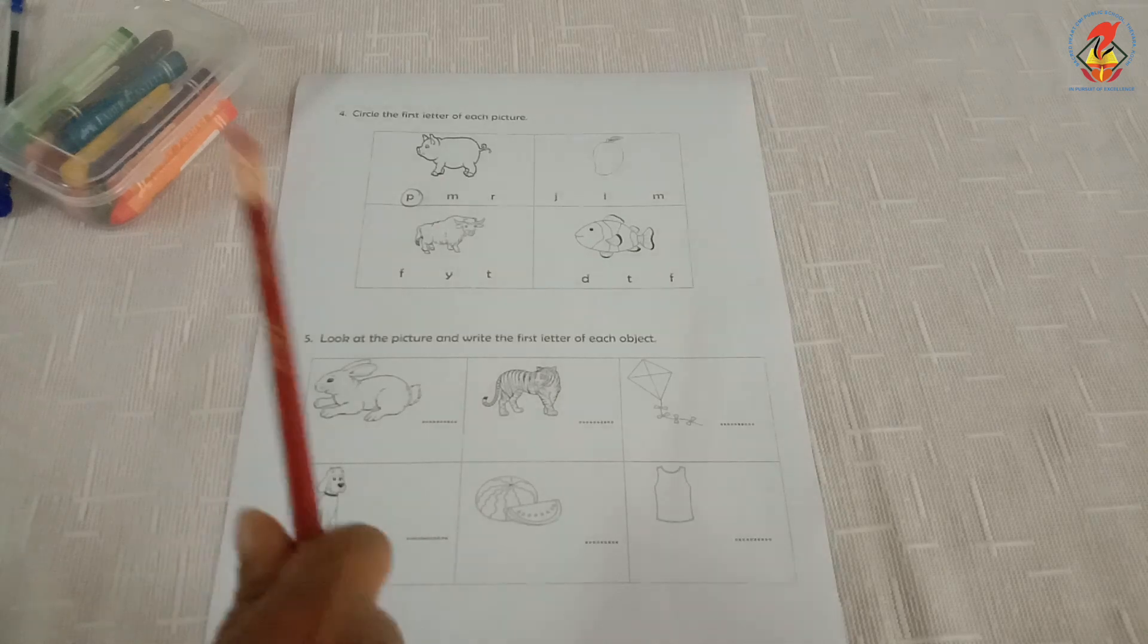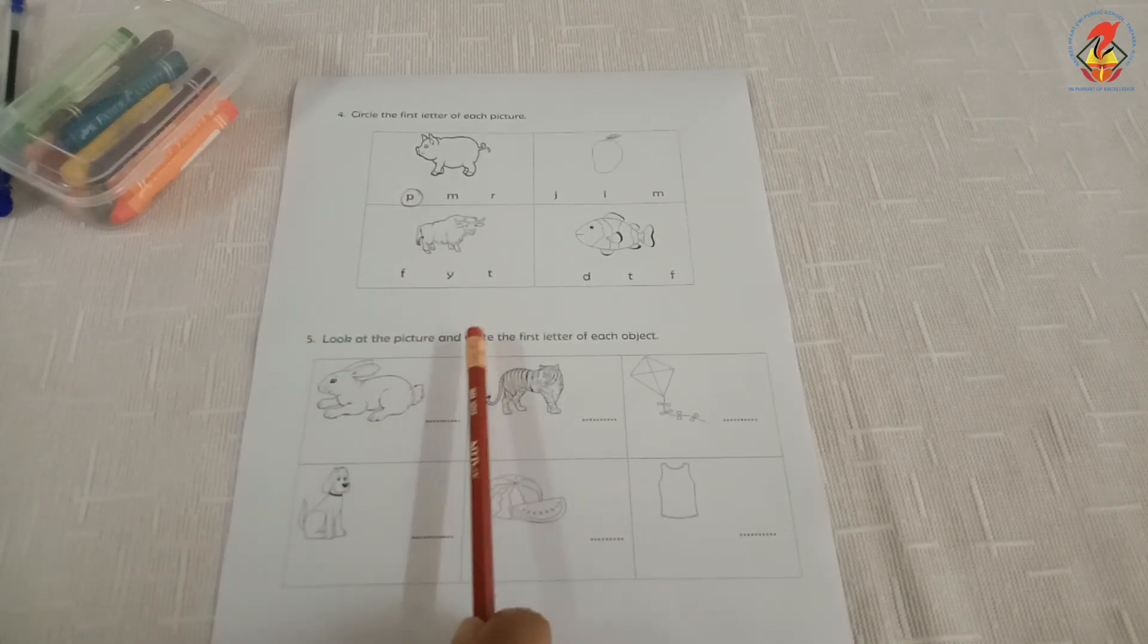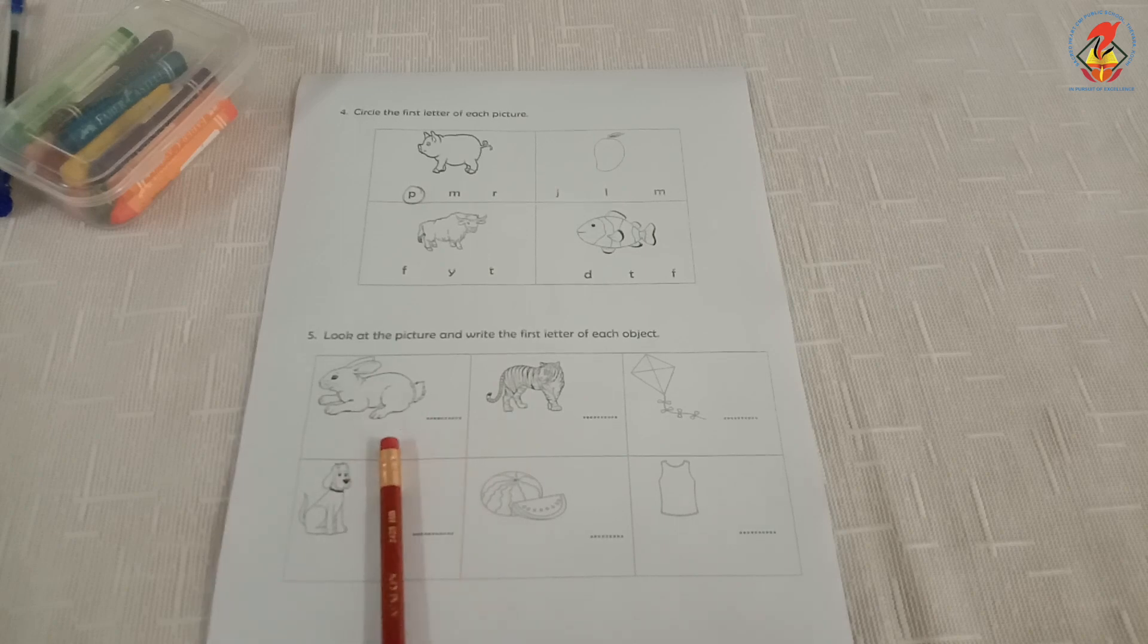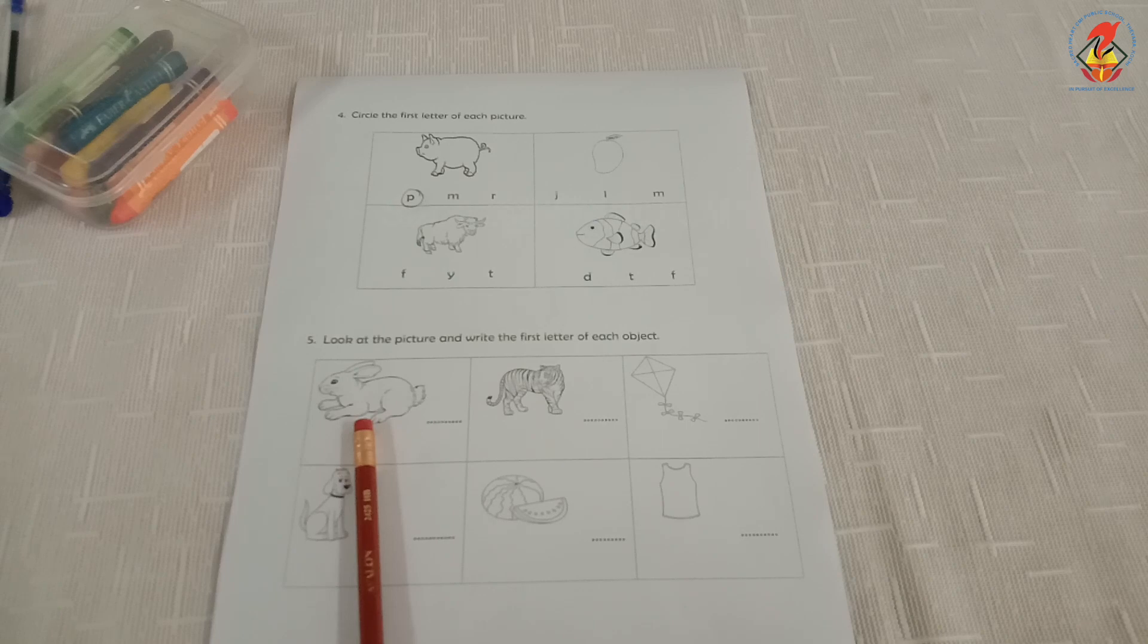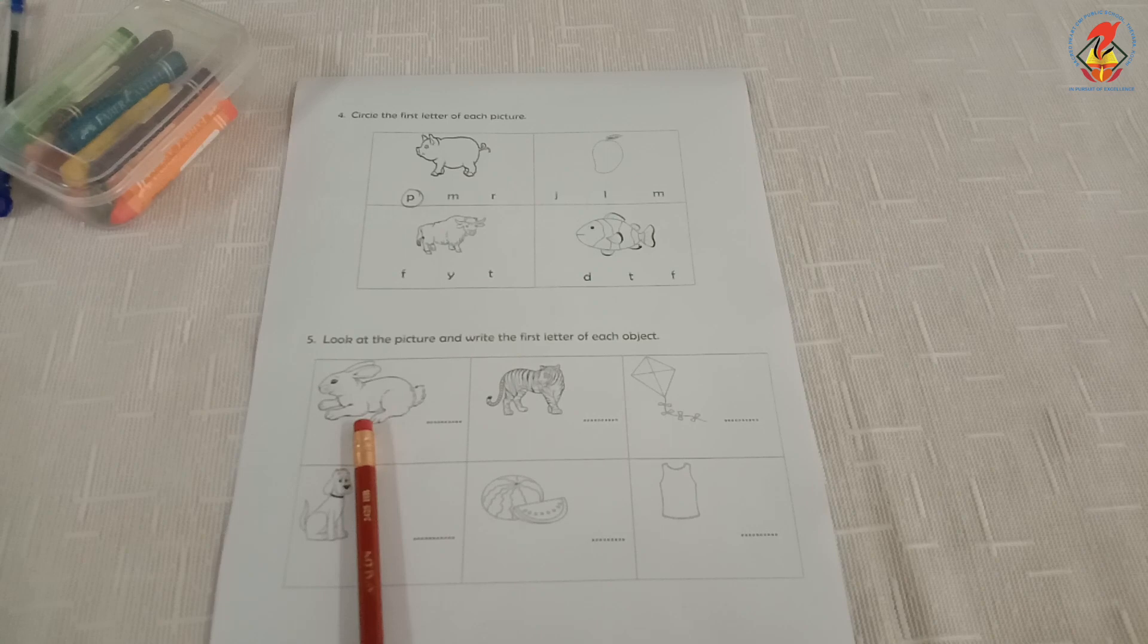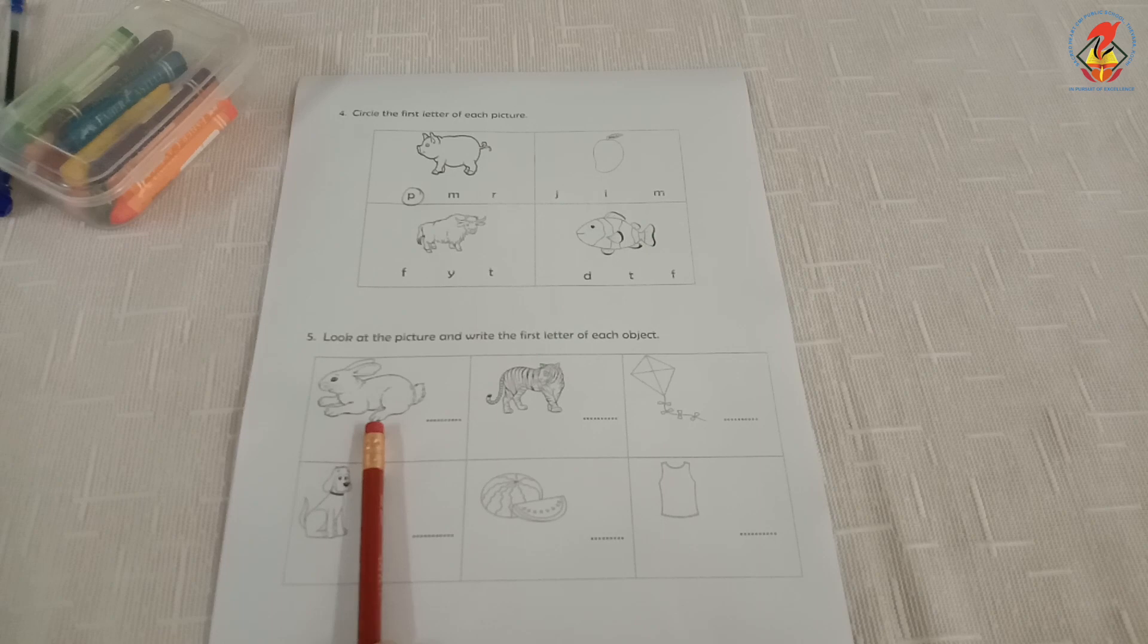The fifth question is, look at the picture and write the first letter of each object. Here, let us do the first question. What is the first picture? Rabbit. And what is the sound? R rabbit. The R sound represents letter R.